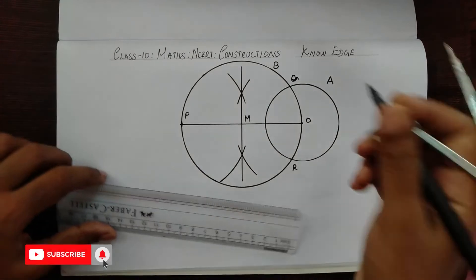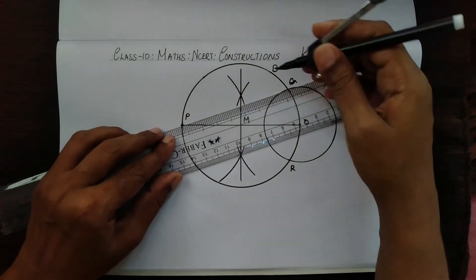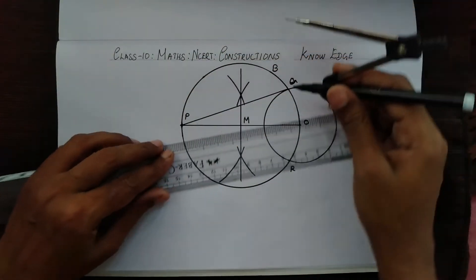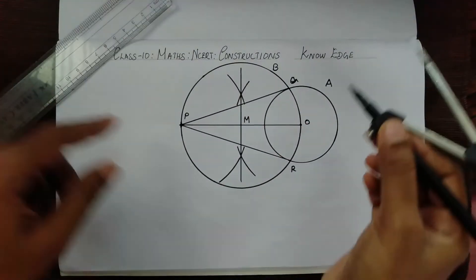Now we shall join PQ and PR. This is PQ and this is PR. These are the two tangents to circle A.